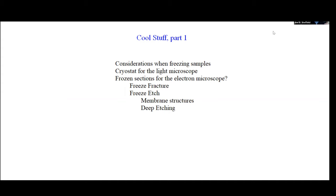But as you'll see in a minute, there were some problems that came up when freezing samples and cutting samples. So I'm going to talk a little bit about the cryostat, which is a machine for cutting frozen sections for use in the light microscope. Then we're going to look into the electron microscope parallels and look at the freeze fracture technique compared to freeze etching and get into some issues of how to interpret those kinds of images.